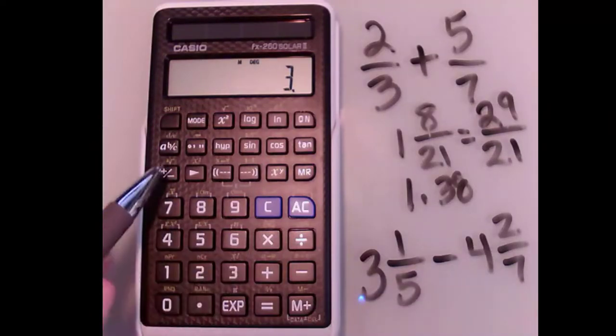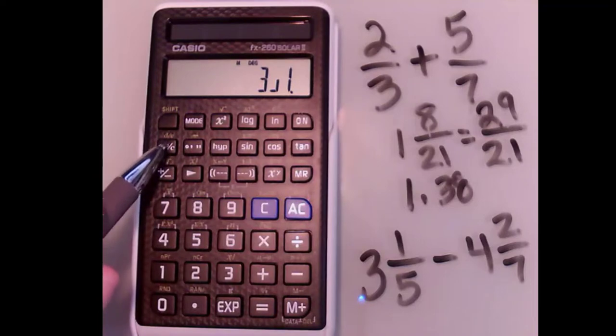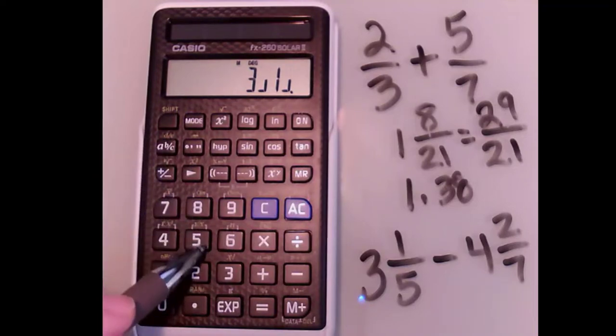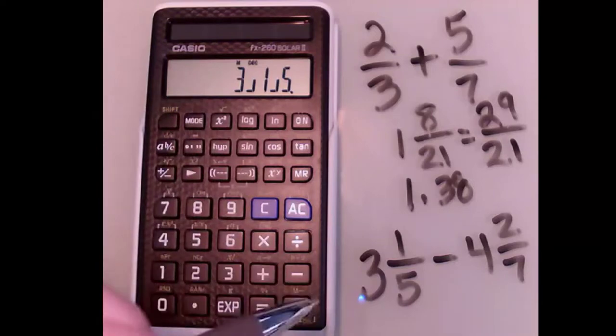So 3 whole, and then I'm going to hit the fraction button, and that shows the whole. Now I'm going to enter the fractional part, 1 over 5. So whole and fractional part—that's what it looks like.